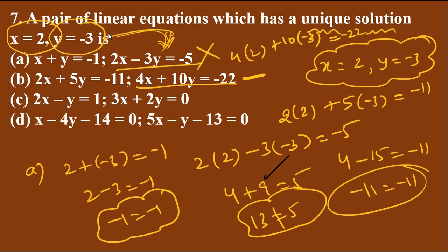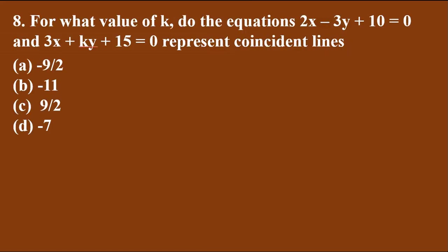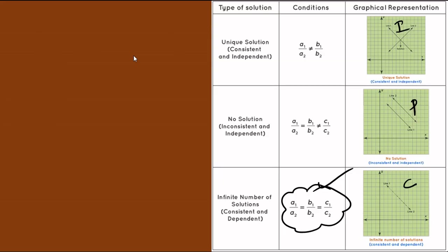For coincident lines the condition is a1/a2 = b1/b2 = c1/c2. Applying this: a1/a2 = 2/3 equals b1/b2 = (−3)/k. Cross-multiplying: 2k = −9, therefore k = −9/2. The answer is −9/2.